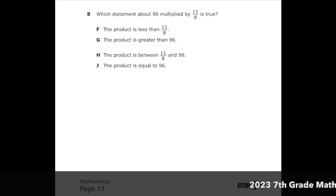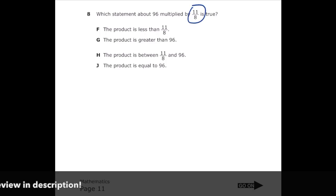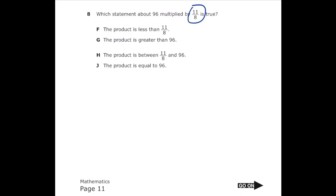This is number 8 from the 2022 6th grade math STAR test. Which statement about 96 multiplied by 11 over 8 is true? We know if we're multiplying by 11 over 8, which is greater than 1 because the numerator is greater than the denominator, our product is going to end up being a bigger number. If we look at the answer choices, letter G says the product is greater than 96, and that's going to be true. So our correct answer is letter G.